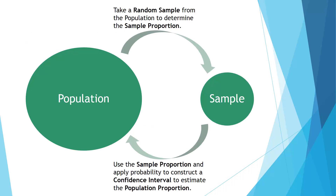Before we get going, it's important to understand the big idea with confidence intervals. We have this thing called the population, which is everything with that characteristic or variable that we're interested in. We want to know something about a measurement from that population, also known as a population parameter. In this case, we want to know something about the population proportion. What we do is we take a simple random sample from the population — we might only select 100 individuals — and from that sample we can calculate things like our sample proportion or standard error.